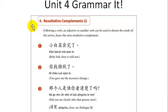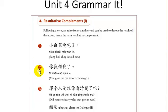Here we have what's called a resultative complement. Following a verb, an adjective or another verb can be used to denote the result of the action. For example: 小白菜卖完了 — bok choy is sold out; 完 is the result of the action. 你找错钱了 — 找 is the act of giving change and 错 is the result; you gave me the incorrect change.